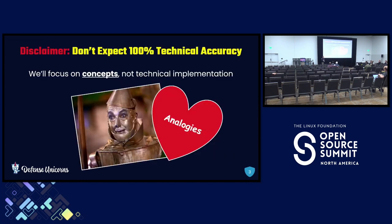With that comes my disclaimer for this talk: don't expect 100% technical accuracy here. This is a beginner talk and our focus is on concepts, not technical implementation. I will use a lot of analogies and relate things to the way a language model learns things the way a human learns things. The neurons in this sack of meat don't function the same way as the ones and zeros in that computer, but we can use those analogies to get a common understanding.